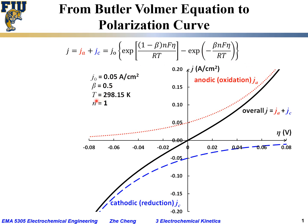Let's plug in some numbers. Assuming temperature is room temperature — 25°C or 298.15 K — beta (the symmetry factor) is 0.5, and J₀ (the exchange current density) is 50 mA/cm² or 0.05 A/cm². With R, F, and N=1 known, we can generate the resulting polarization plot.